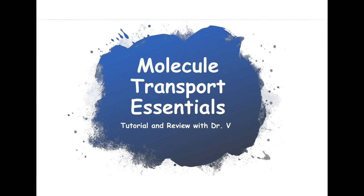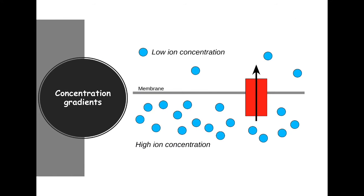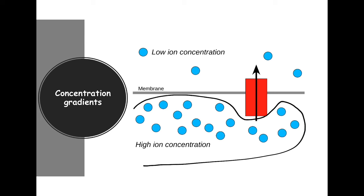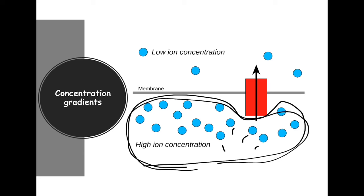So if you've ever put some Kool-Aid in a cup of water, or dropped something colorful in a body of water, you immediately notice that it starts to dissipate and spread out. The reason we see that is because molecules like to follow concentration gradients. That means things want to go from an area of high concentration to a lower area — going from high to low concentrations.